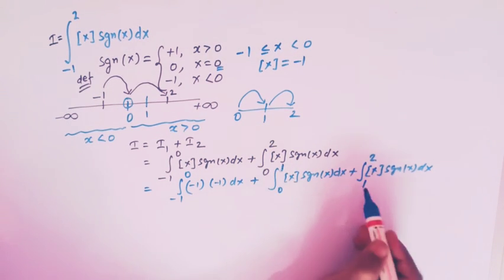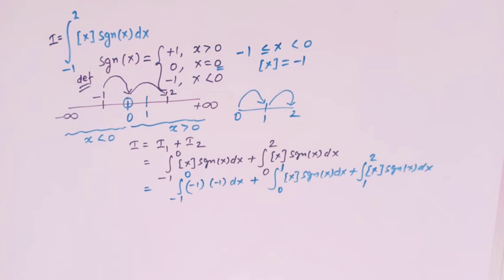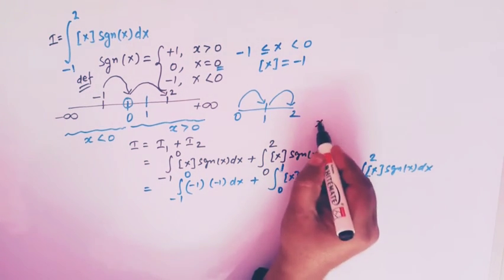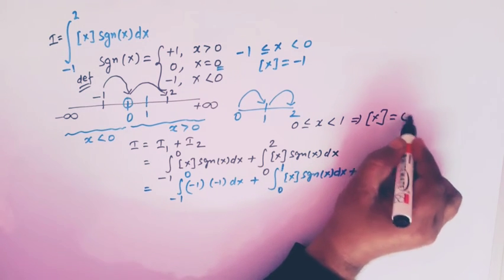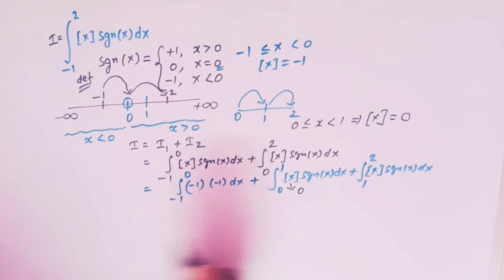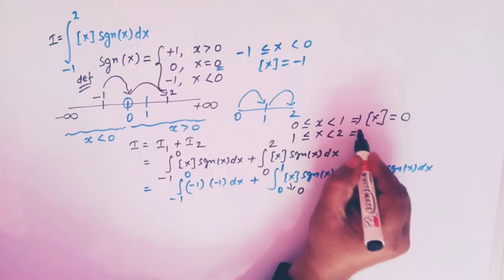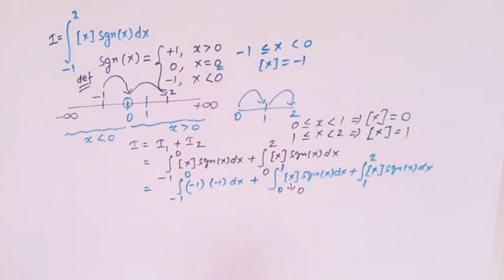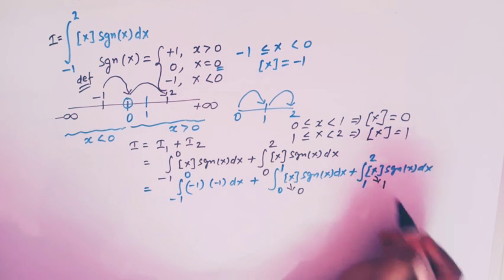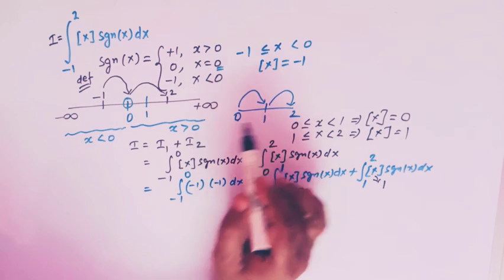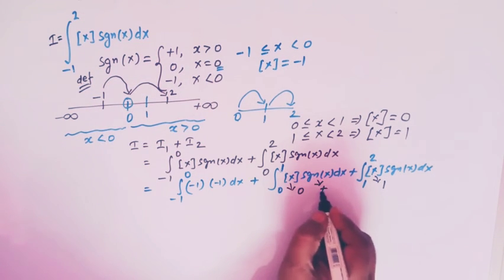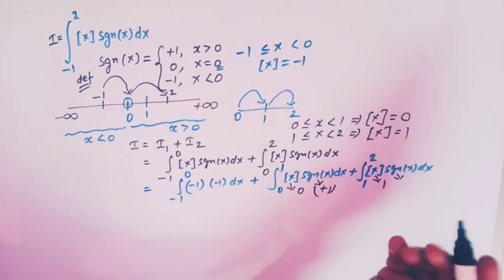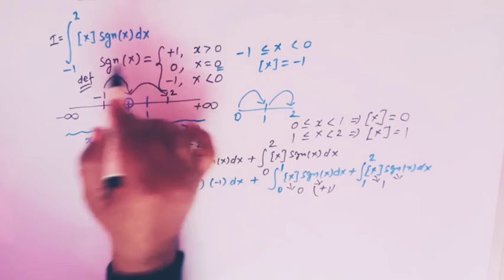When x lies between zero and one, the greatest integer of x equals zero, and since all values of x are greater than zero, signum of x equals plus one. When x lies between one and two, the greatest integer of x equals one, and signum of x also equals plus one since all values are greater than zero.